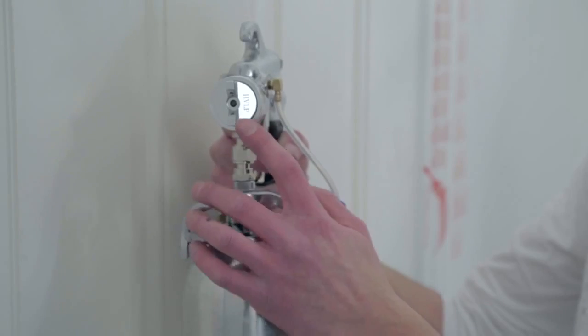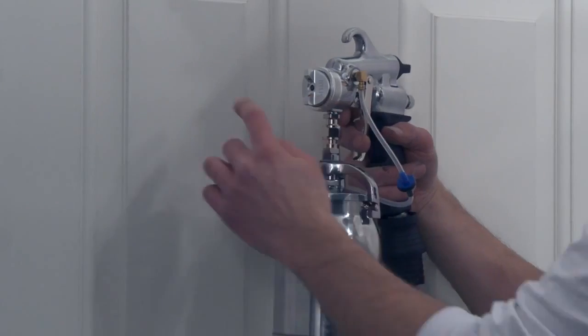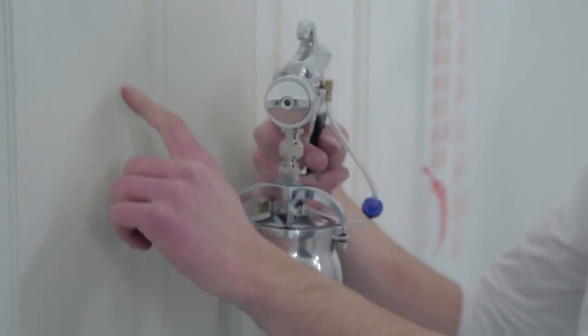At the front of the spray gun is the air cap. In the position shown, it is set to spray in a vertical direction. By turning the air cap, the spray gun can be set to spray in a horizontal direction.